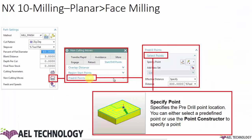Next is defining pre-drill points. It is very similar to selecting a point in region start points — the only difference is that you know there is a hole there and you define that particular point; the rest remains the same. If the pre-drill point is outside the effective distance, the system won't consider that point and creates its own starting point. I will show you all of this in UG NX.